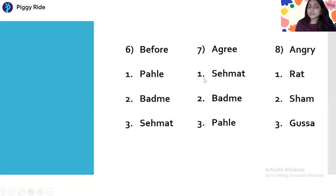Question seven is 'Agree.' Agree means — option one: Sehmat, option two: Badme, option three: Pahle. The correct answer is Sehmat. Sehmat is the Hindi meaning of Agree.